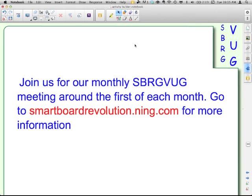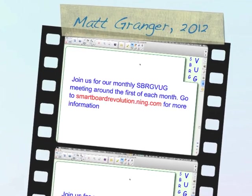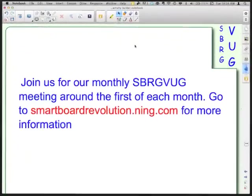Join us for our monthly meetings around the first of the month. You can find more information and current schedule and links to past meeting recordings at thesmartboardrevolution.ning.com. This has been Matt Granger for the Smart Survival Guides.